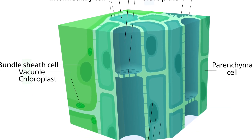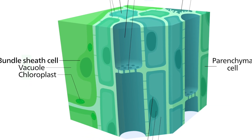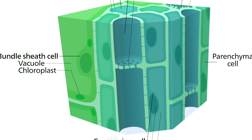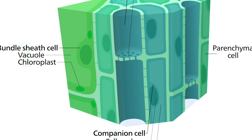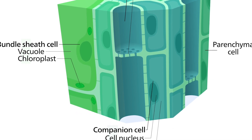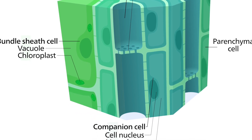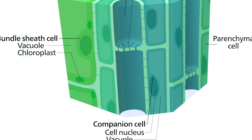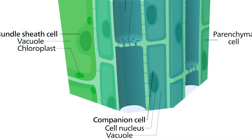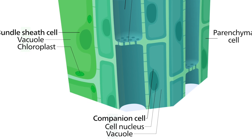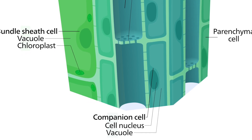Phloem cells are also supported by companion cells that help keep them alive. These companion cells contain a lot of mitochondria that transfer the energy needed to move dissolved food up and down the plant in the phloem.